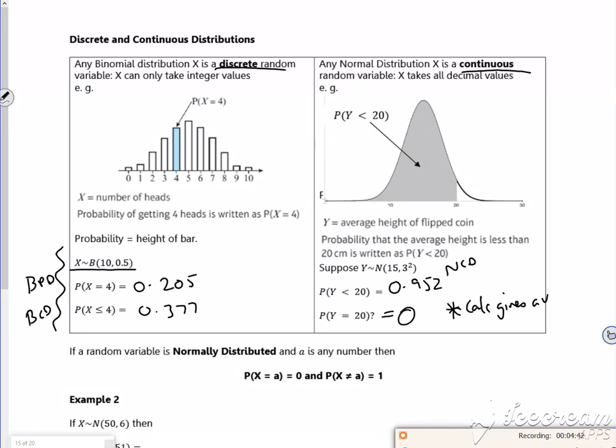But just remember it's zero for this one. The reason your calculator gives you a value is because it integrates and finds the area, and you don't know what its boundaries are for 20. It might be 19.99 to 20.001, I don't know. Right, time's running out, this is nearly done, so I'll see you later.